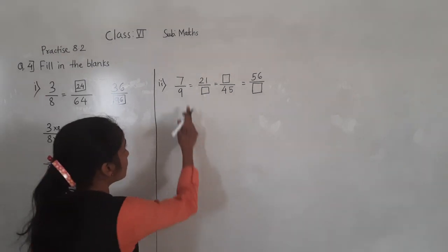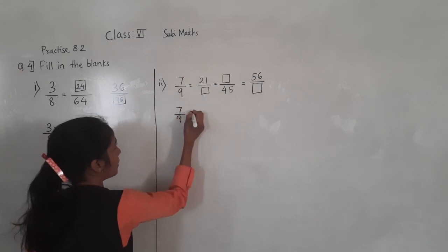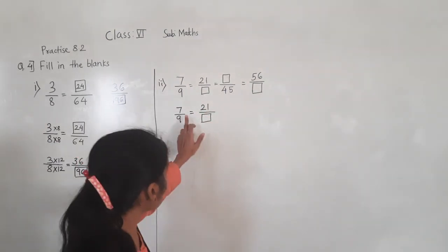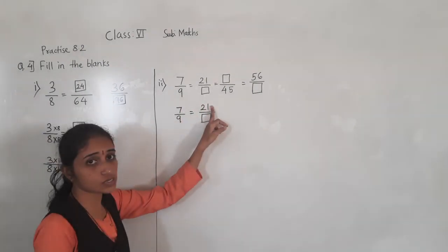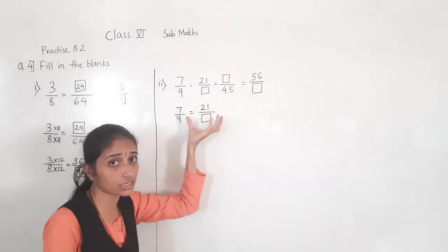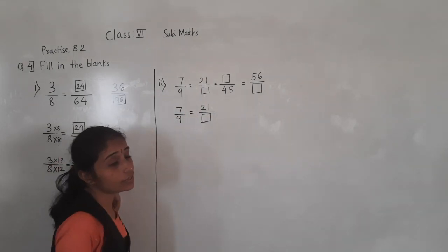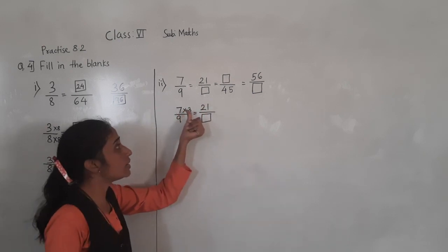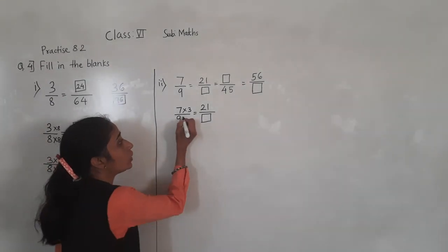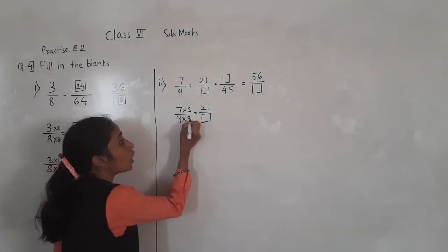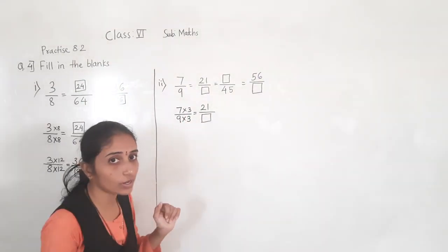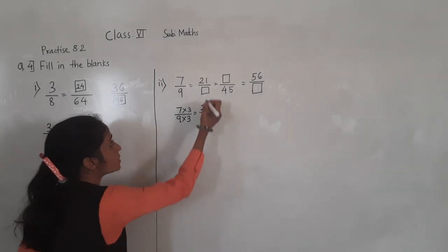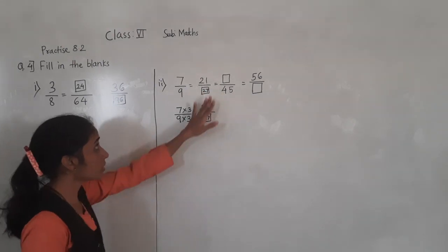Now let's solve the next example. The given fraction is 7 upon 9. Let's take the first number: 21 upon blank box. So here numerator is 7 and here numerator is 21 — these are equal, these are equivalent fractions. Now 7 threes are 21, so if I multiply by 3 for 7, I get 21.